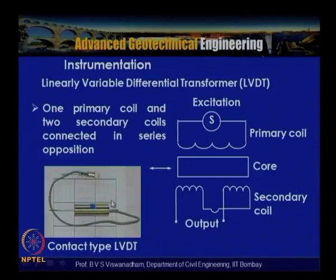Contact-type LVDTs must be calibrated — for a given millimetre displacement, the transducer output voltage is recorded. Calibration is done by subjecting the LVDT to displacements of 0, 5, 10, and 15 mm, plotting displacement versus output voltage to obtain a linear relationship. Travel ranges of ±25 mm or ±50 mm are selected depending on the required measurement range.